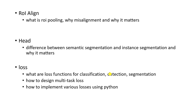Here we are using a multi-task loss — we have three branches: classification, detection, and segmentation. We also focus on how we design those loss functions. The second thing is: once you have the theory, how do you implement those functions in Python? Many people know the theory but don't know how to calculate the area of a bounding box or compute Intersection over Union in code.